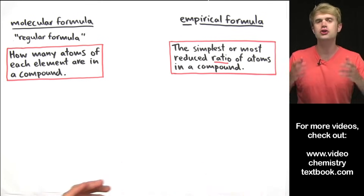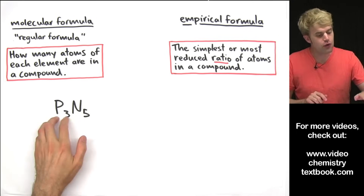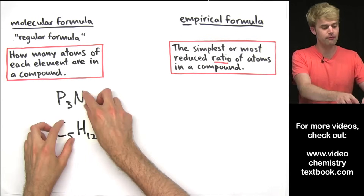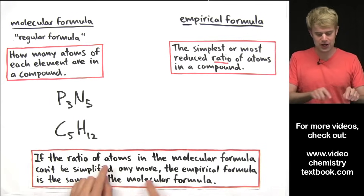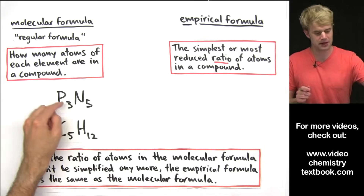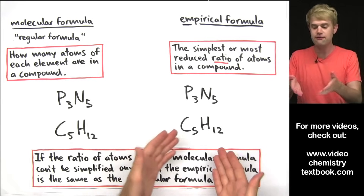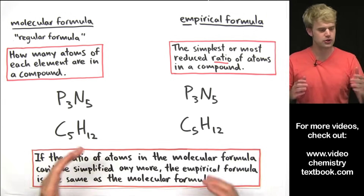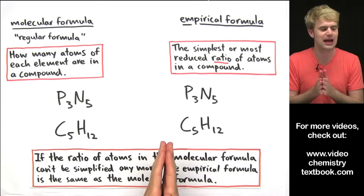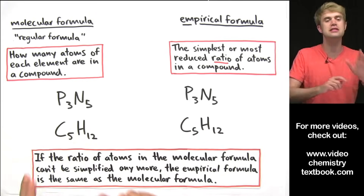Now with some molecular formulas, you just can't simplify them anymore. For example, P3N5 — there's no number we can divide both of these by to simplify it further. The same is true for C5H12 — there's nothing we can divide both 5 and 12 by. When this happens, if the ratio of atoms in the molecular formula can't be simplified anymore, the empirical formula is the same as the molecular formula. So for P3N5, its empirical formula is P3N5, and for C5H12, its empirical formula is just C5H12. Teachers and textbooks love to give you molecular formulas that you can't reduce anymore and ask what the empirical formula is — don't be freaked out by it. It just means the empirical formula is exactly the same as the molecular formula.